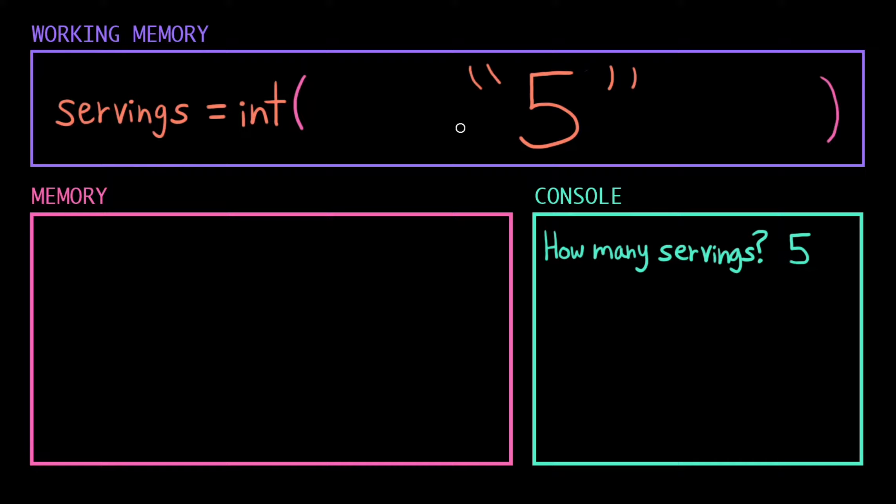Great, now we have a much simpler expression. The computer goes to the parentheses first, sees that it's already a single value, so there's nothing to do, peeks outside the parentheses, and sees the int function. The int function takes that string 5, casts it to an integer, and returns out the value 5.